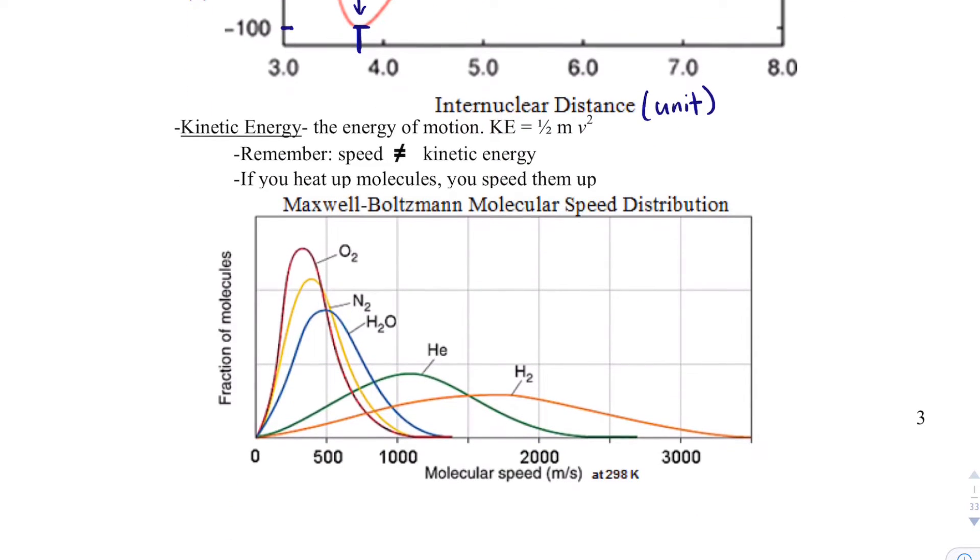If we remember these Maxwell-Boltzmann distributions, heavier - or more scientifically, more massive molecules with literally more mass - move slower.